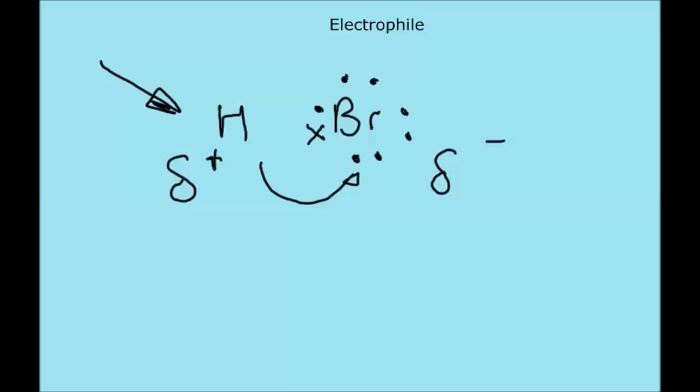At some point, the bromine may pull all of the electrons away from the hydrogen, leaving a positive ion. That's the electrophile.